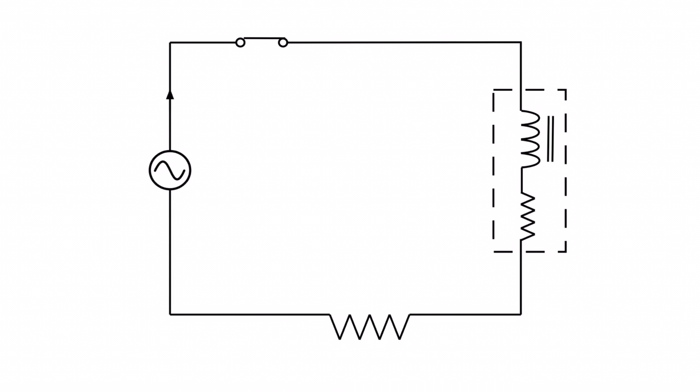As we know, a coil is literally that — it's just a coil of wire wrapped around a core. All wire has resistance, so we need to signify that somehow. That's why we show the resistance and the inductance separately, with the box indicating that the whole thing together is the coil.